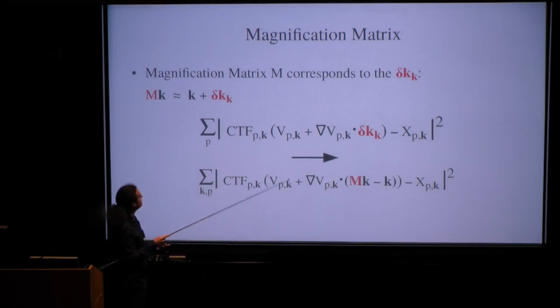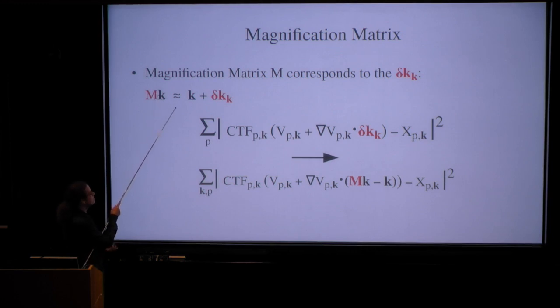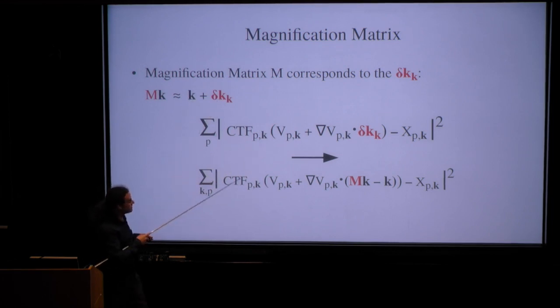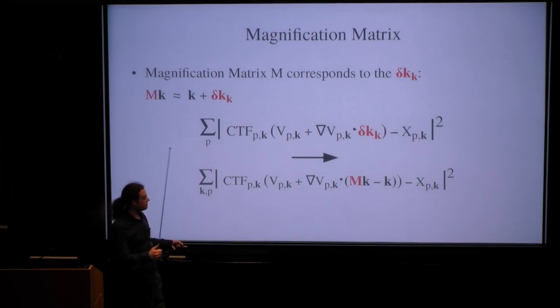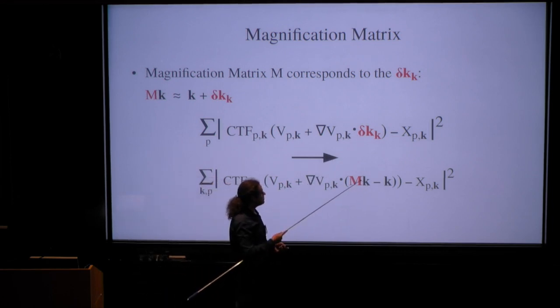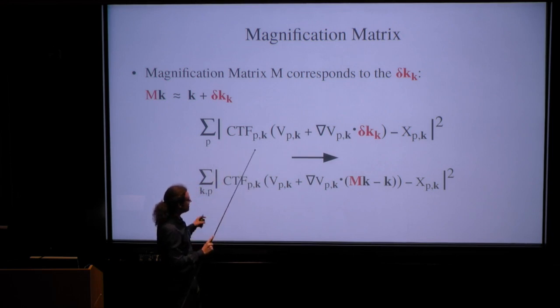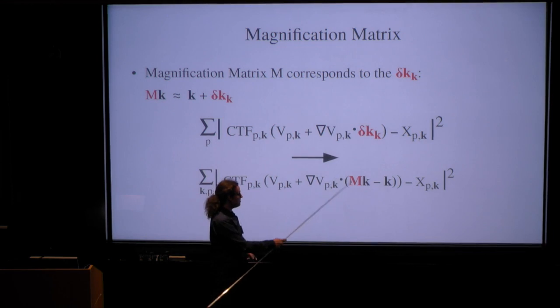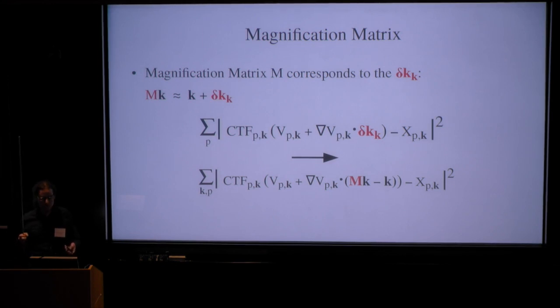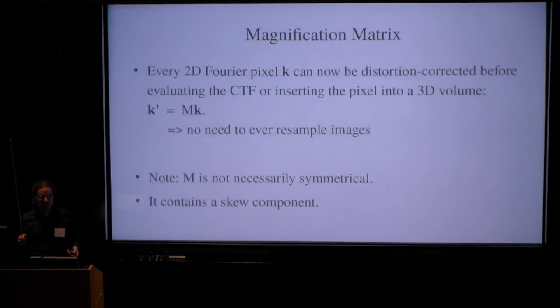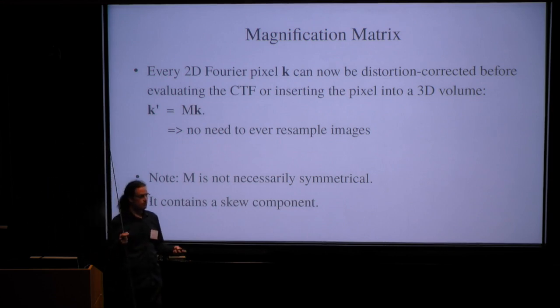We can, instead of estimating these per-pixel displacements, we can just estimate one magnification matrix M. So we want to find a matrix that, when applied to the coordinates in Fourier space, gives us new coordinates that are similar to k delocalized by δk. And this is again nicely linear. And we don't need to do anything new. We have all the terms that we need, assuming we've computed the δks. So we can solve this in fractions of a millisecond, probably, because it's nicely linear. It's just four unknowns that we're looking for. And that's it, then. And we have this M. Relion is now aware of it. And then there's never any need to resample images, as people used to do. Relion just needs to know where to insert a pixel in the 3D volume.